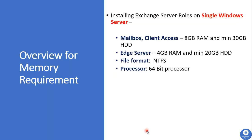For installing Exchange Server 2013 on a single Windows server, if we are installing the Mailbox Server role and the Client Access Server role together, we need a minimum of 8 GB of RAM and 30 GB of hard disk. This is the minimum requirement; if you are planning to host all user mailboxes and save all logs on the on-premises Exchange Server, you will need to add more memory based on your organization's requirements. To install the Edge Transport Server role, we need a minimum of 4 GB of RAM and 20 GB of hard disk.